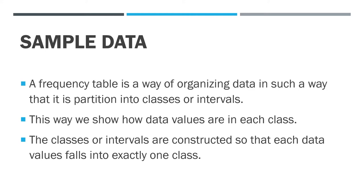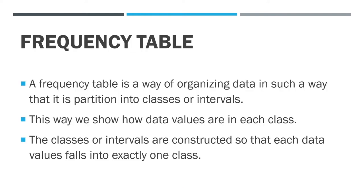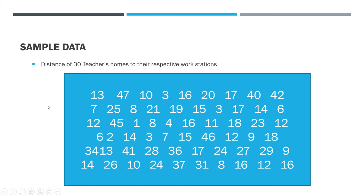So we have sample data here. This is the distance of 30 teachers' homes to their respective workstations — let's say, in kilometers. As you can see, this is a group of data that is not organized in a way that we can really gain insights. We could not even tell what the highest value is. So we need to organize this so that we'll be able to gain insights as to what data we have.